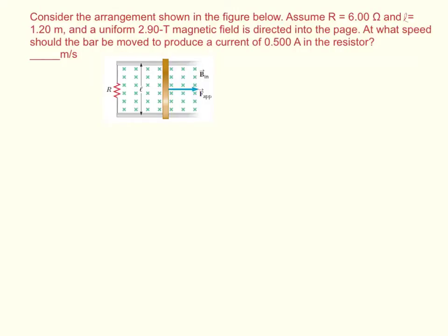So first of all, by Ohm's law, we know that the EMF is equal to the current times the resistance. And we also know that the EMF is equal to the number of turns times the change of the magnetic flux over time.